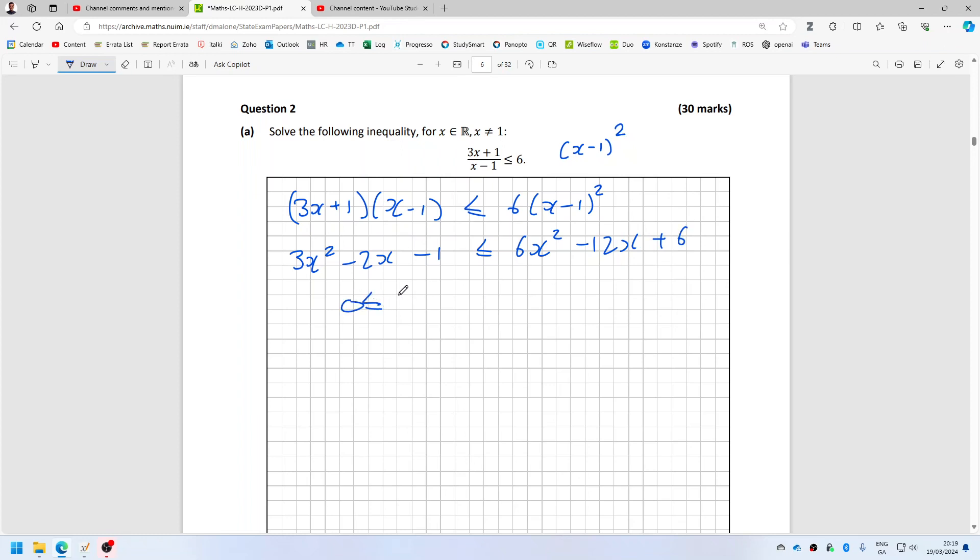So that would be taking everything to the right, 3x squared minus 10x plus 7.